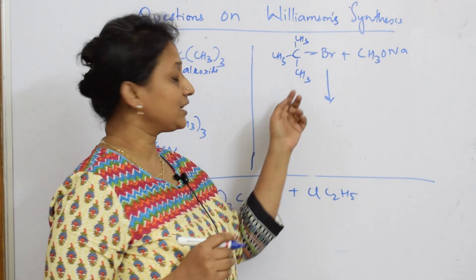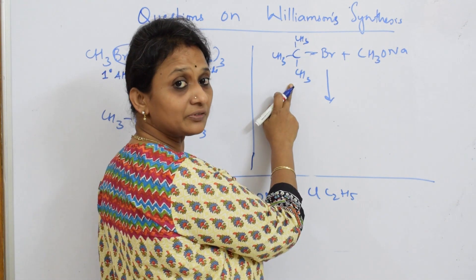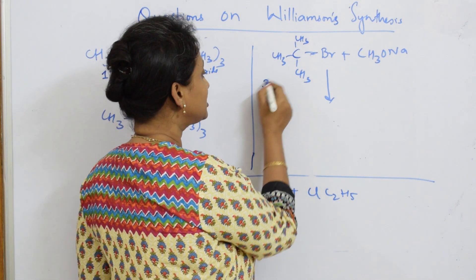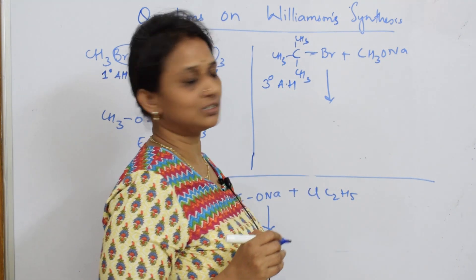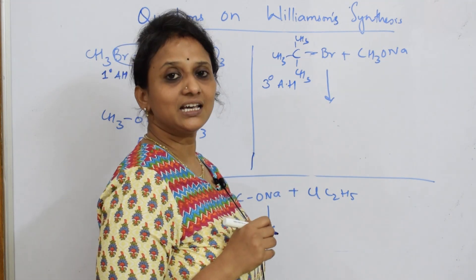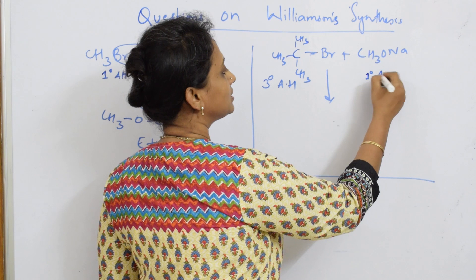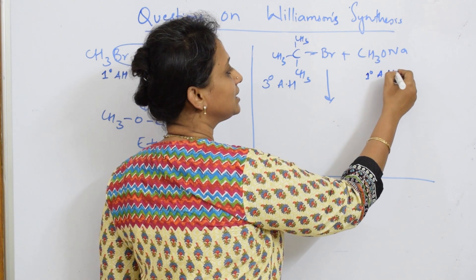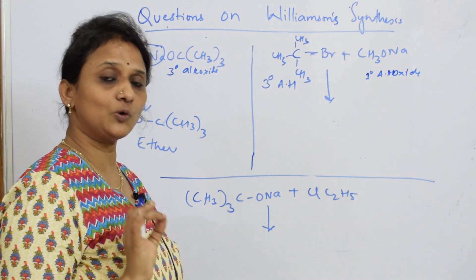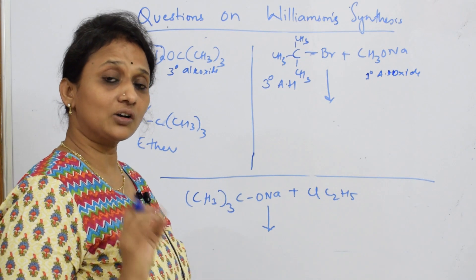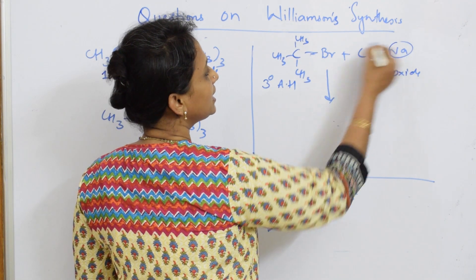Now coming back, your whole concentration should be on the alkyl halides. As soon as you see this alkyl halide — which type is it? This is a tertiary alkyl halide. This is your bulkier group and this is the less hindered, less steric hindrance group — so this is your primary alkyl halide. As soon as you see a primary-tertiary alkyl halide combination, you have to find or write the product as an alkene.